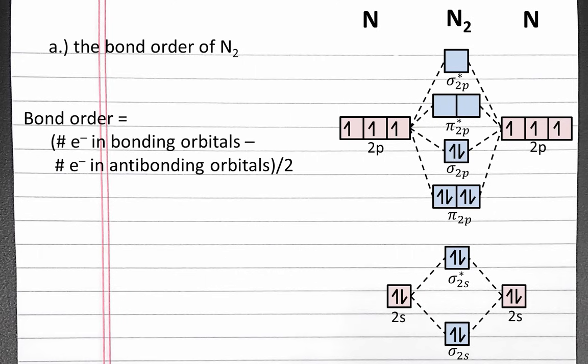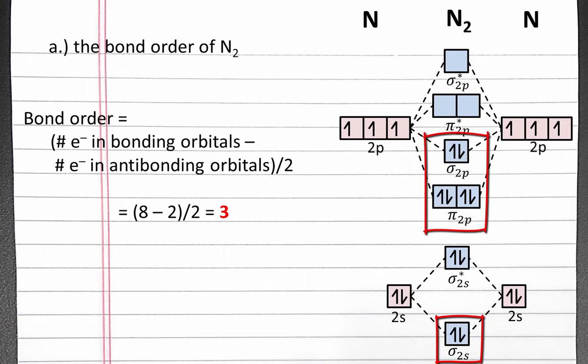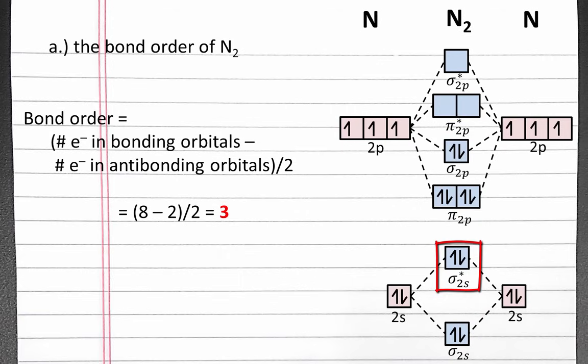To calculate bond order, we'll take the number of electrons in bonding orbitals, subtract the number of electrons in antibonding orbitals, and divide that quantity by 2. In our N2 molecule, we have 8 electrons in bonding orbitals and 2 electrons in antibonding orbitals. So 8 minus 2 is 6, divided by 2, equals 3.